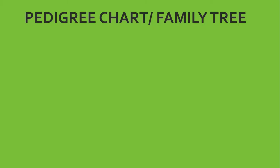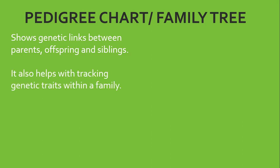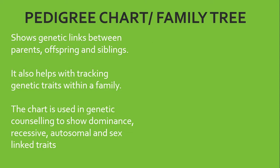The pedigree chart is sometimes called the family tree and it helps us do a whole lot of stuff in genetics. These include showing genetic links between parents, offspring and sibling. It also helps with tracking genetic traits within a family.